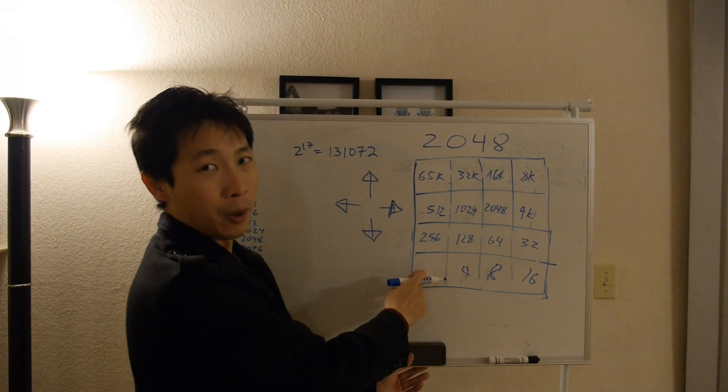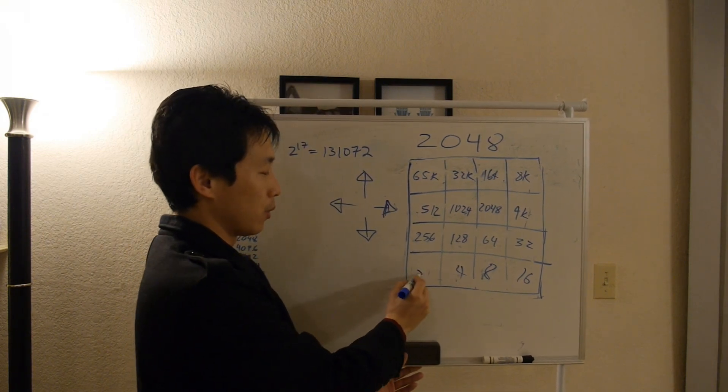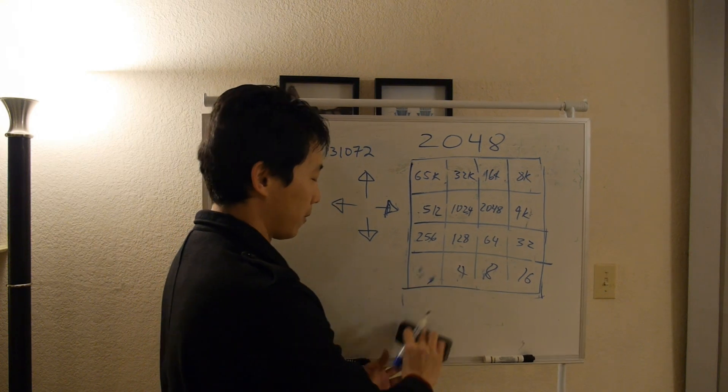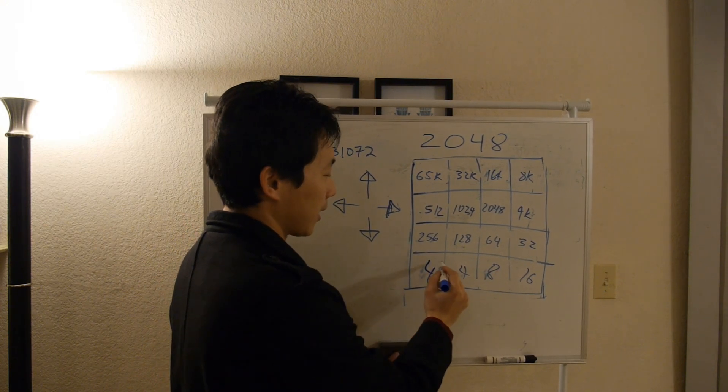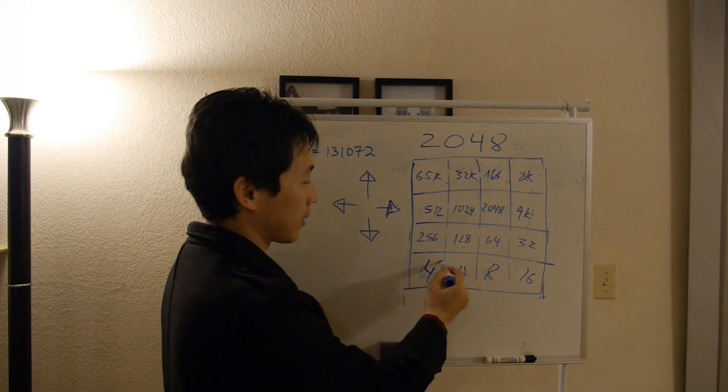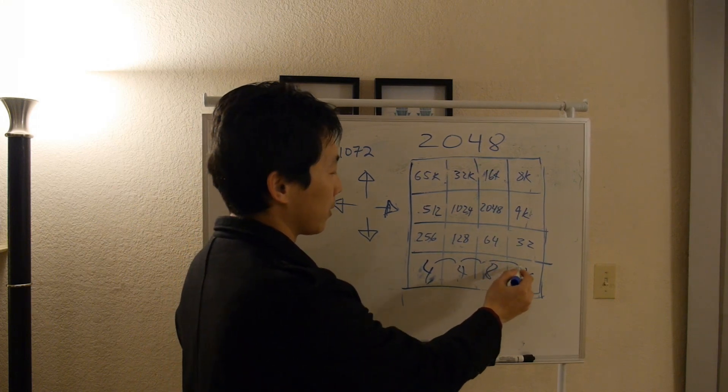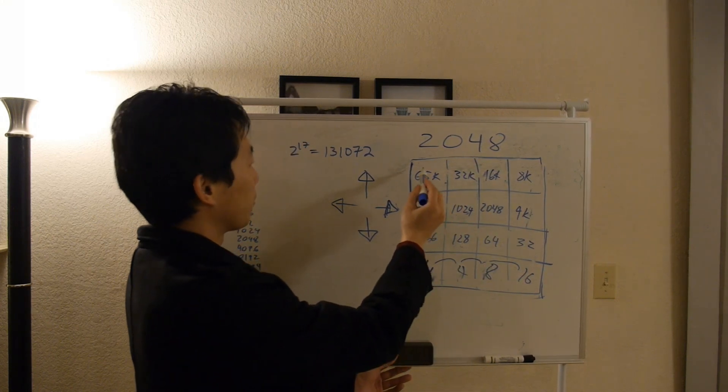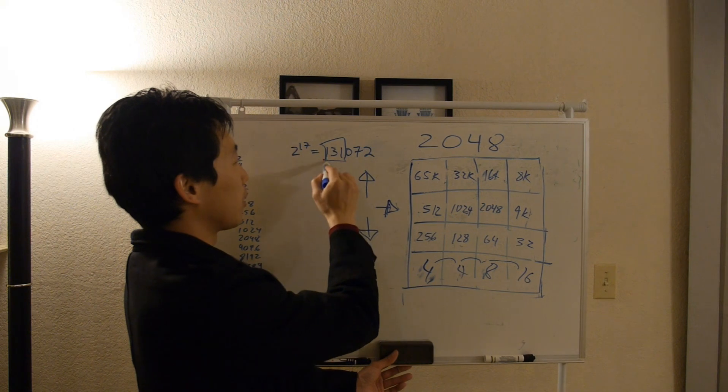And now that there's an open spot, either a 2 or a 4 can appear. Let's say it's a 4. Then I would get the cascade effect where it would go from one to the other, all the way to the end where then I would end up with the 131k tile.